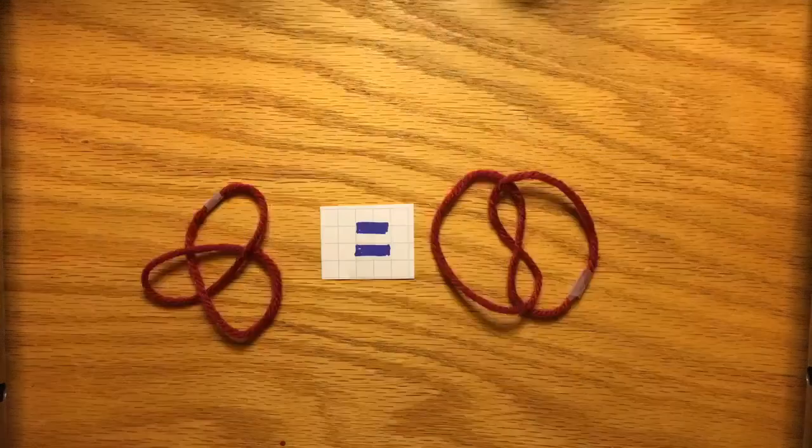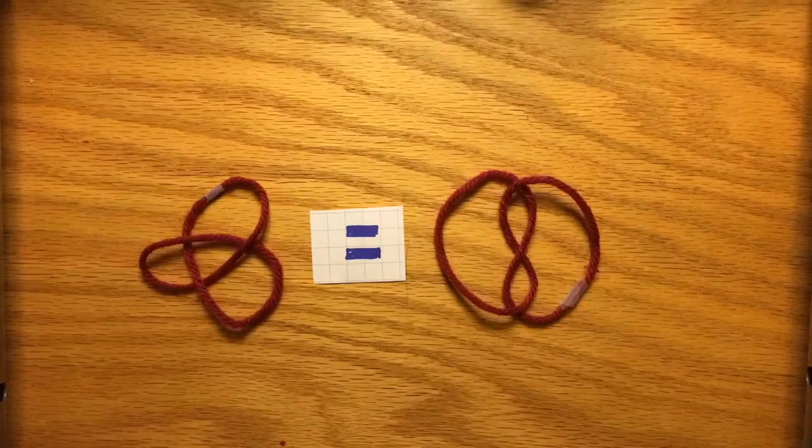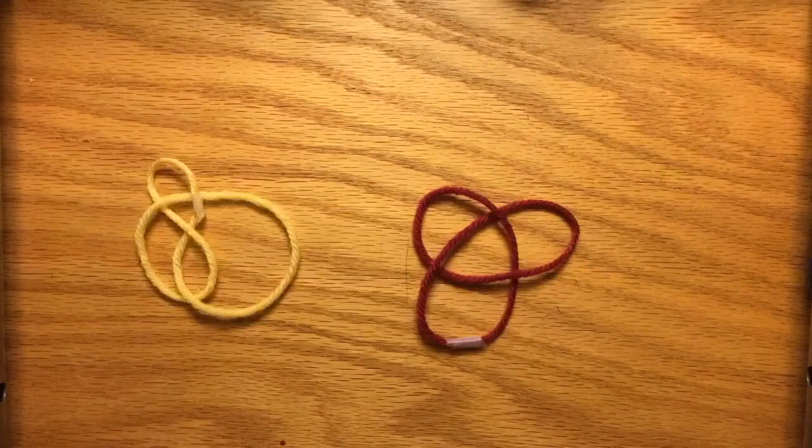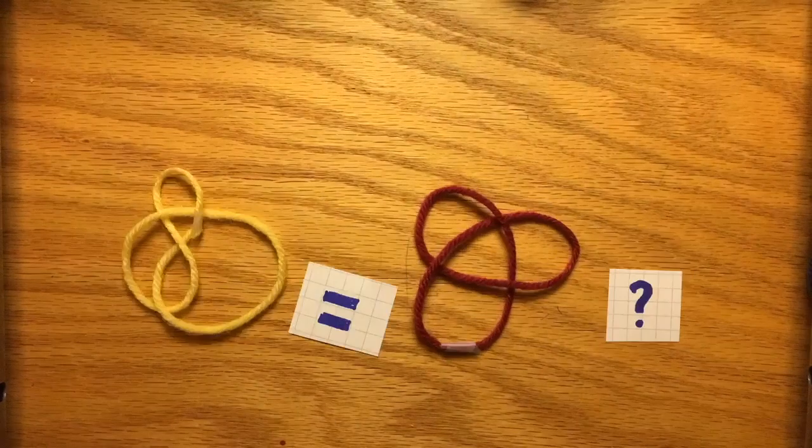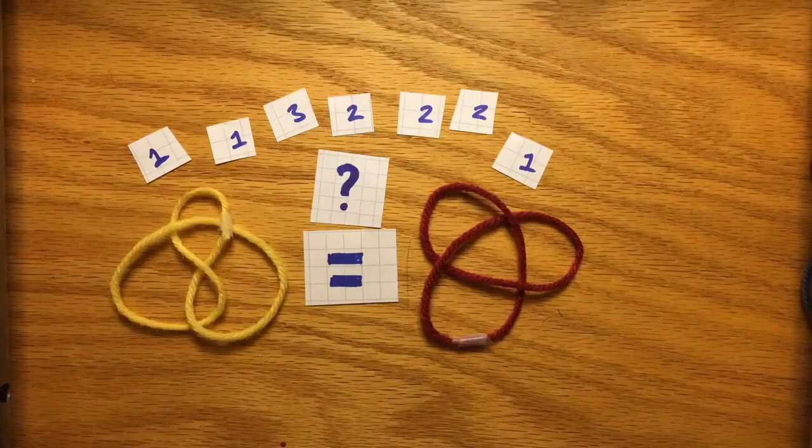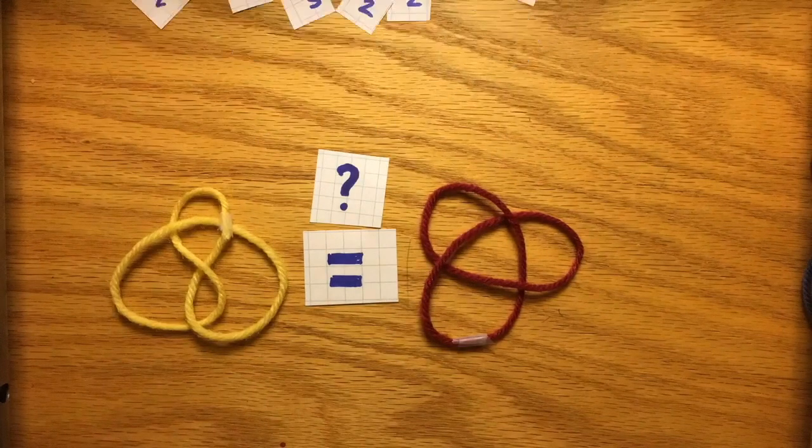And even if these moves all seem really simple, when they're put together, you can modify a knot to be a knot that looks completely different. Let's go back to these knots. Can we prove that these knots aren't the same? How can we be sure that there isn't some really long combination of moves that would change one knot to the other?